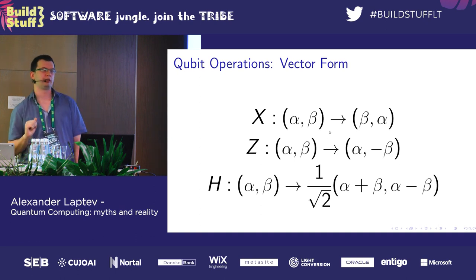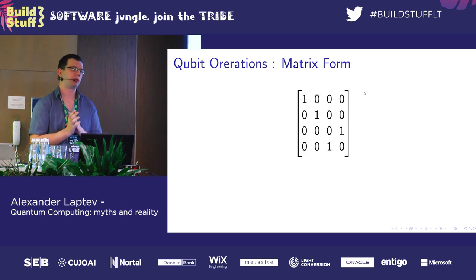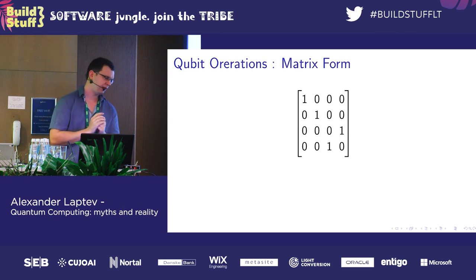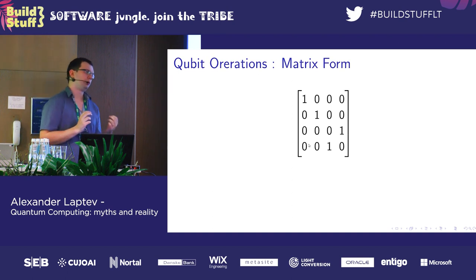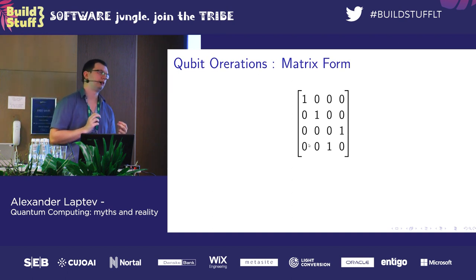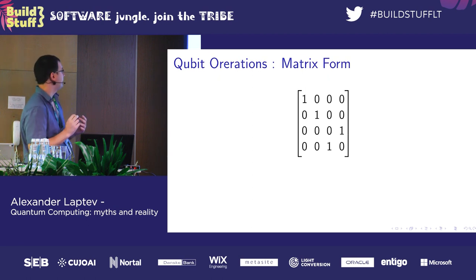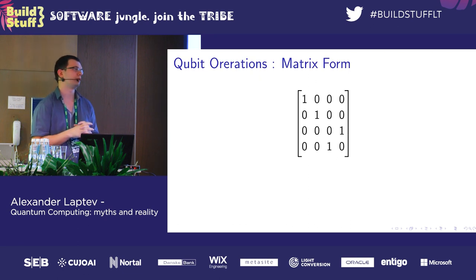A much simpler notation is circuits — something you can work with online; there will be links at the end. By technical limitations we usually use only a few operations: X, Z, and their controlled variants. That's why it's more or less simple to describe programs in block form using circuits.